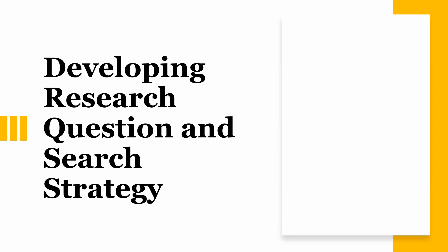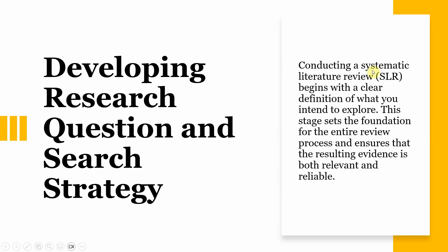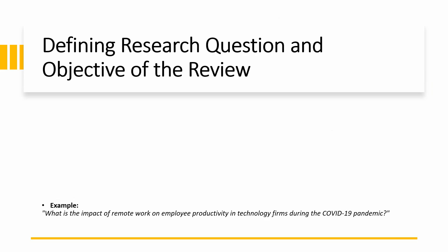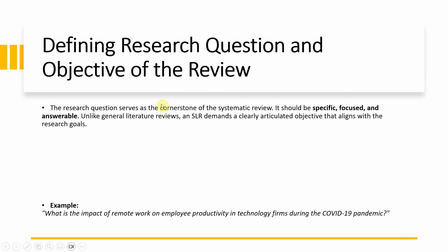Developing a research question and search strategy. Conducting a systematic literature review begins with a clear definition of what you intend to explore. This stage sets the foundation for the entire review process and ensures that the resulting evidence is both relevant and reliable. To conduct a more conclusive systematic literature review, you need to have a research question or different research questions. The research question serves as the cornerstone of the systematic review — it should be specific, focused, and answerable. Unlike general literature reviews, an SLR demands a clearly articulated objective that aligns with the research goal.